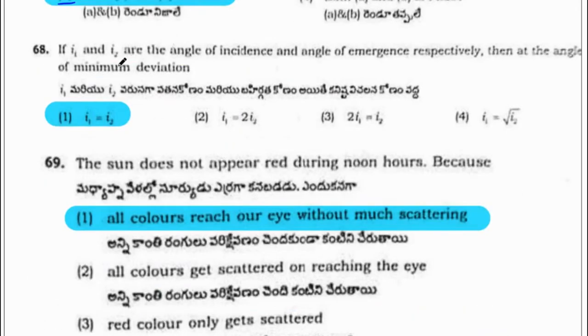If I1 and I2 are the angle of incidence and angle of emergence respectively, then at the angle of minimum deviation they will be equal — I1 will be equal to I2. The correct option is 1.